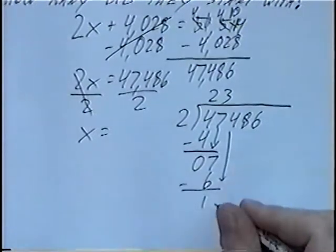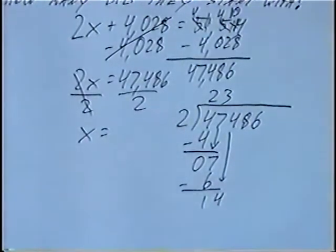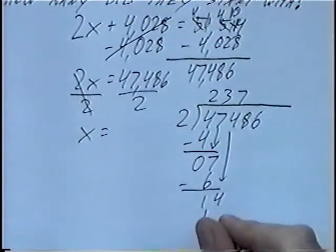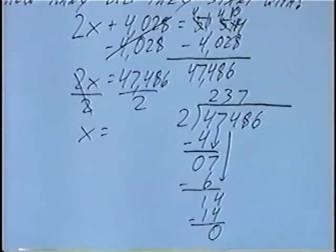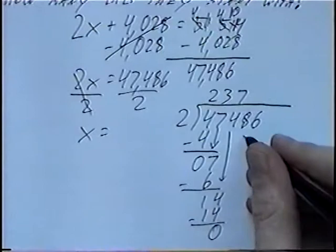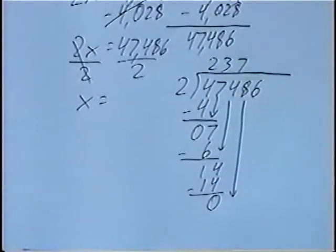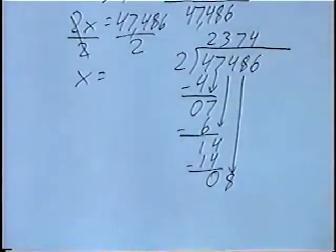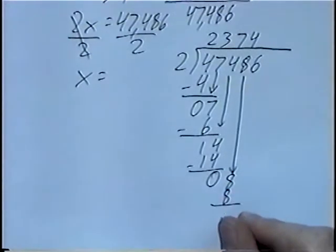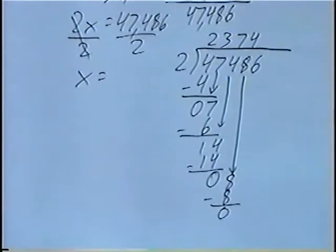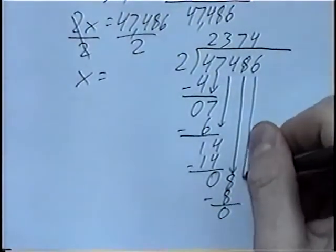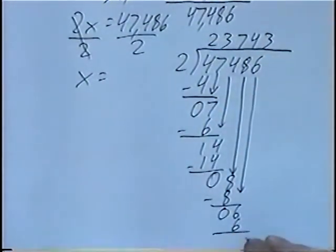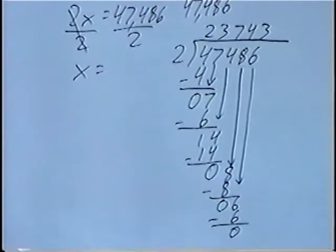Bringing the next number down. The 1 changes into 14 now. 2 into 14 goes 7 times. 7 times 2 would be 14. Subtracting would be 0. The next number we can bring down, which would be an 8. 2 into 8 goes 4 times. 4 times 2 would be 8. Subtracting again would be 0. And last number we'll bring down is 6. 2 into 6 would be 3. And 3 times 2 would be 6. Subtracting, which is 0. Which means we have no remainder.